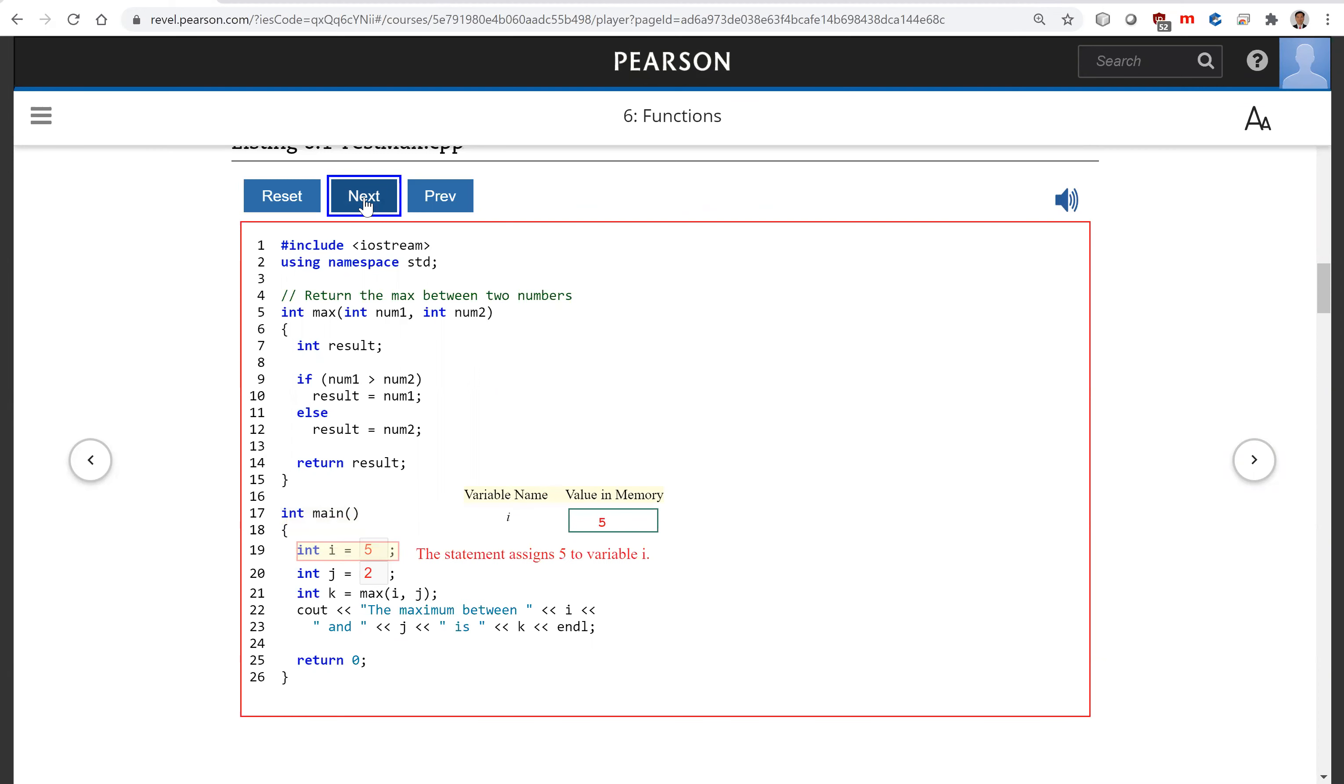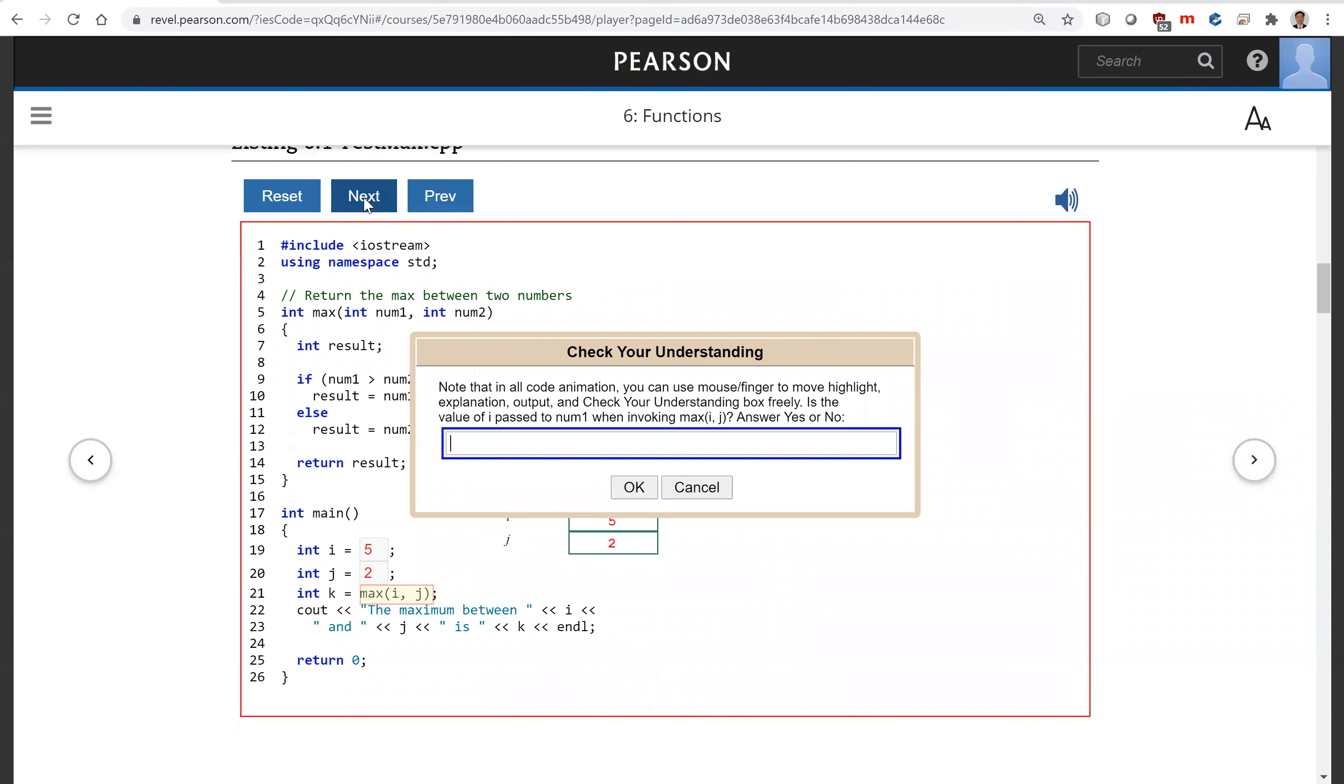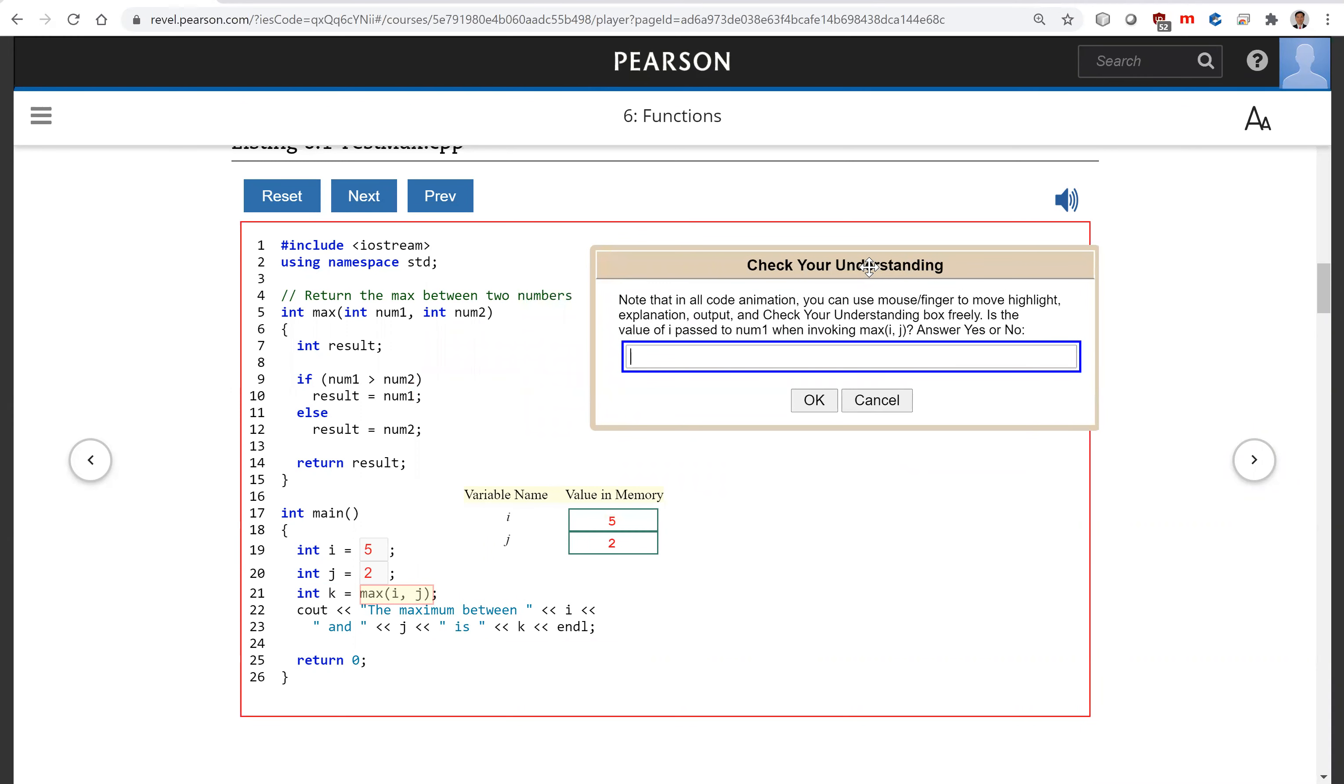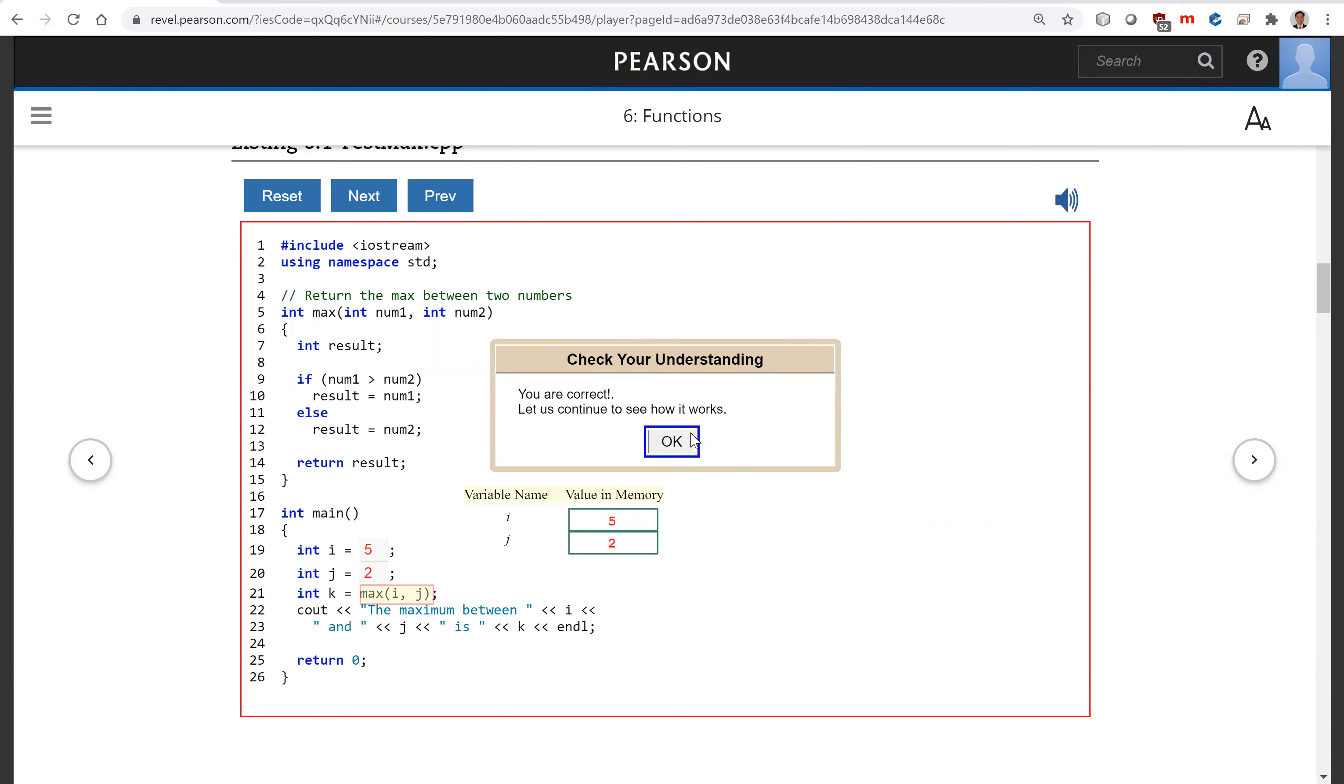Using this animation, we're going to turn this audio on. The program starts the execution from the main function. The statement assigns 5 to variable i. The statement assigns 2 to variable j. The statement will invoke the max function and assign the return value from the function to k. Check your understanding. Note that in all code animation, you can use mouse or finger to move highlight, explanation, output, and check your understanding box freely. Is the value of i passed to num1 when invoking max i, j? Answer yes or no. Yes.